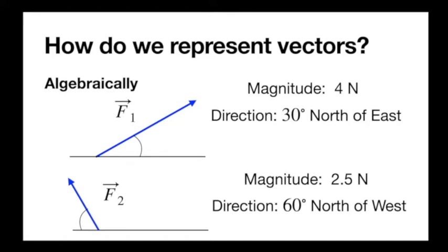It's very important that I say 30 degrees with respect to something — north of east, above the positive x-axis, or 60 degrees east of north. If I just said 30 degrees alone, that doesn't mean anything. I need to say what it's with respect to. And f2 has a shorter magnitude — 2.5 newtons — and a different direction labeled as north of west. When describing a vector, ask yourself: is this specific? Does this describe one unique vector, or is it ambiguous? If it's ambiguous, make it more specific.